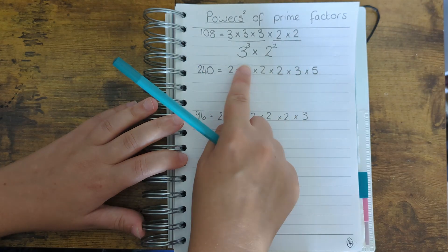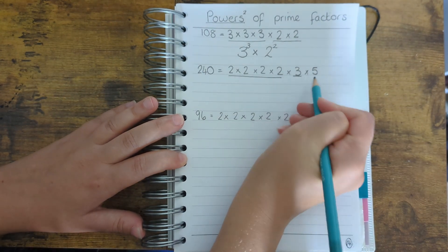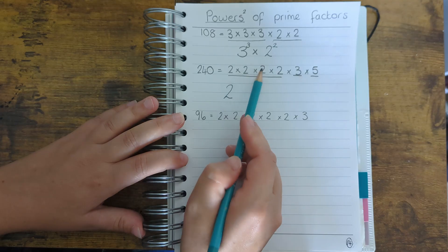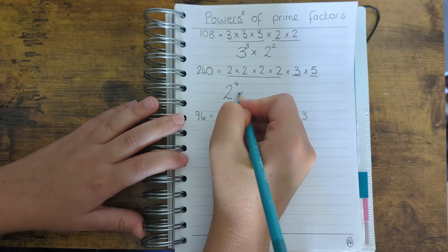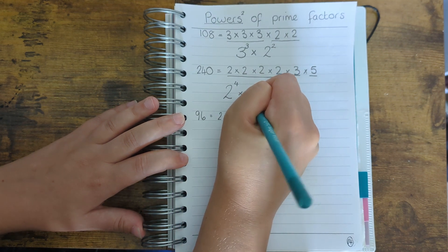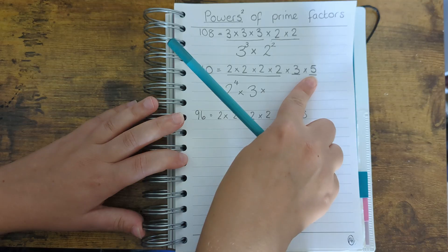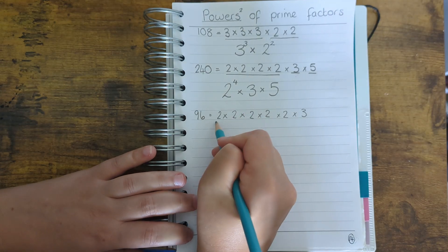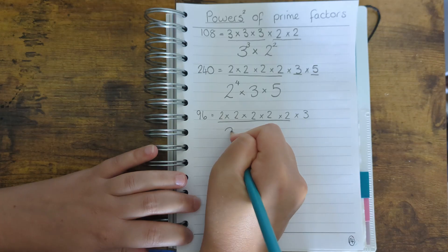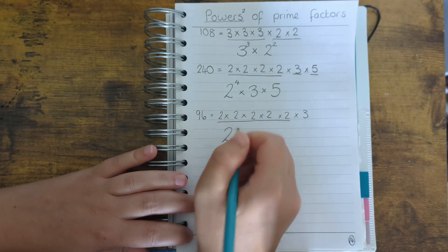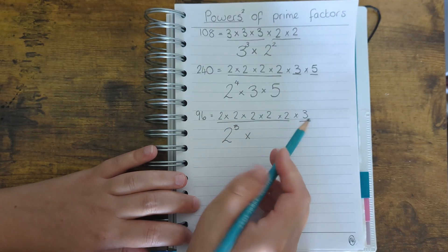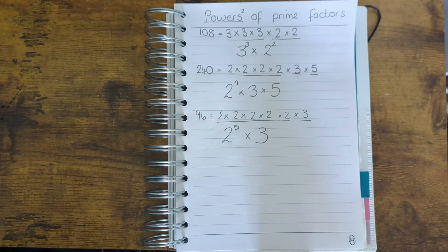For 240, there are four 2s so I can rewrite this as 2 to the power of 4 — I write the 2 and put a little 4 floating in the air. Because there's only one 3 and one 5, these stay as they are. Then for 96, I've got five 2s, so I write the 2 and put a little 5 in the air. Because there's only one 3, that stays as it is. So that's how to find the product of prime factors — I hope you found this video useful and I'll be back soon with more videos. Thank you very much, bye!